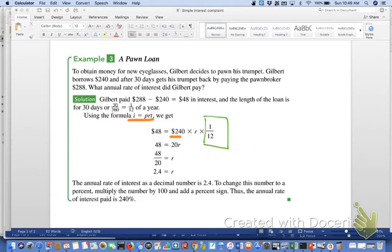They picked 1 over 12 because the question says the loan length is 30 days. They're estimating that 30 days out of 360 is roughly one month, or 1 twelfth of a year. That's why they used the fraction 1 over 12.